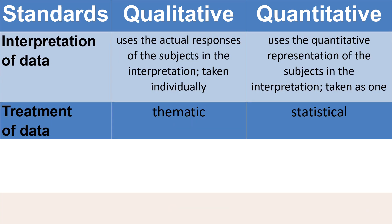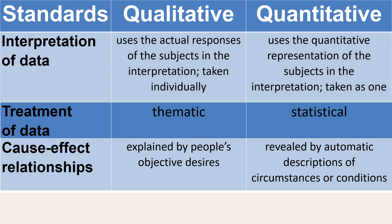For the interpretation and treatment of data, under qualitative research, it uses the actual responses of the subjects as the data is transcribed as it is — no computation, just getting the theme of every answer of the participants. That is why the treatment of data under qualitative research is thematic, which is a method for identifying repeated patterns in the data. Under quantitative research, interpretation requires a larger number of subjects and allows for wider analysis and improving generalization, using statistical treatments as it deals with data in numbers.